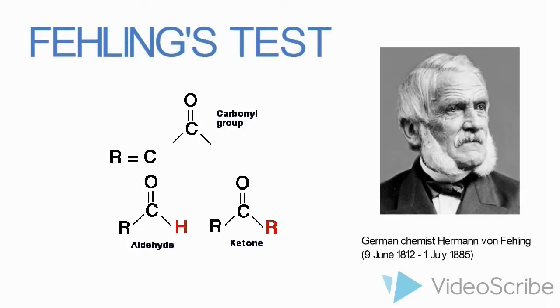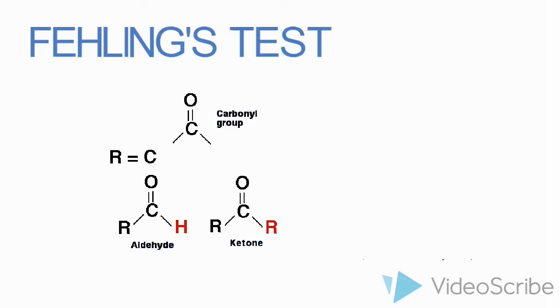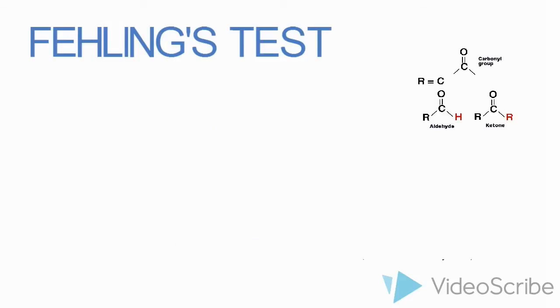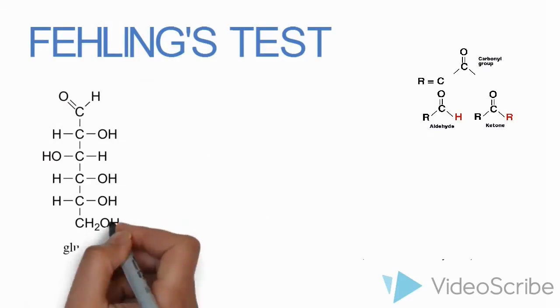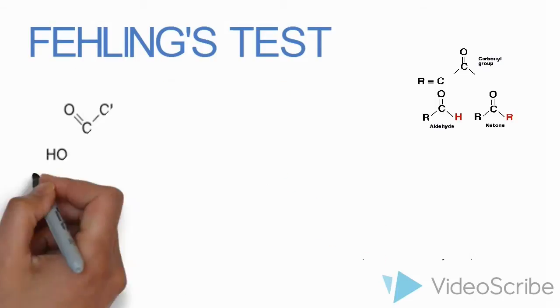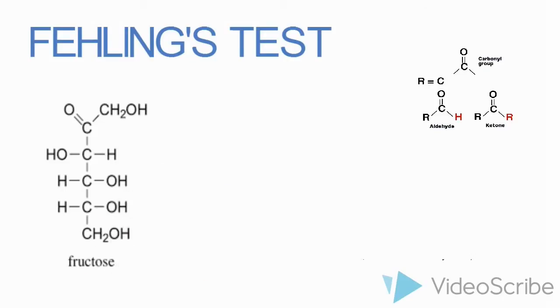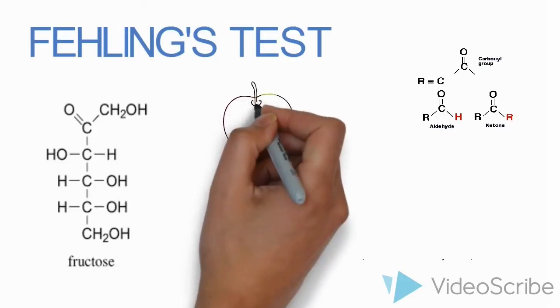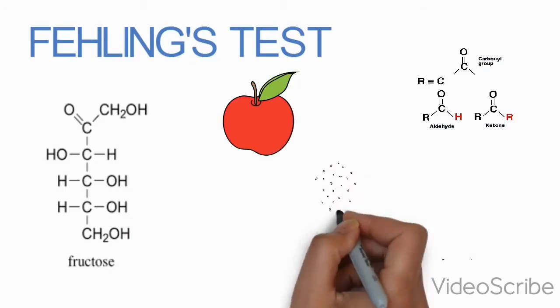The test is used to differentiate between aldehyde and ketone functional groups. The difference between an aldehyde, for example glucose, and a ketone, for example fructose, is the presence of the hydrogen atom attached to the carbon-oxygen double bond in the aldehyde.